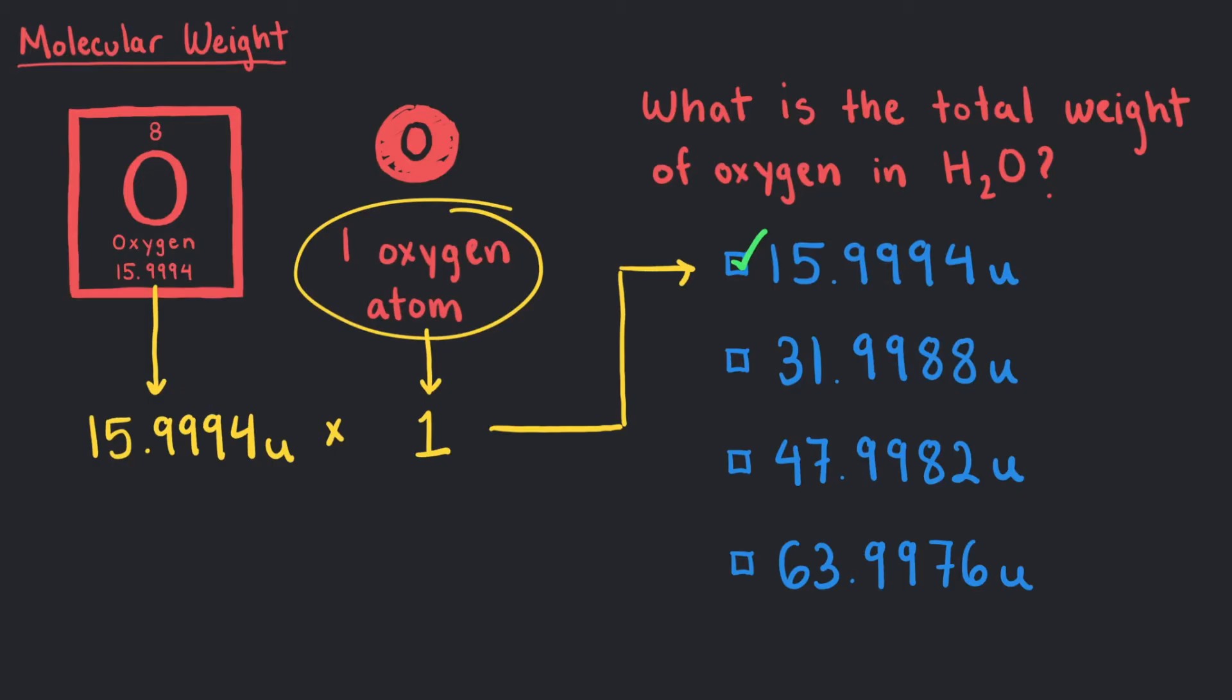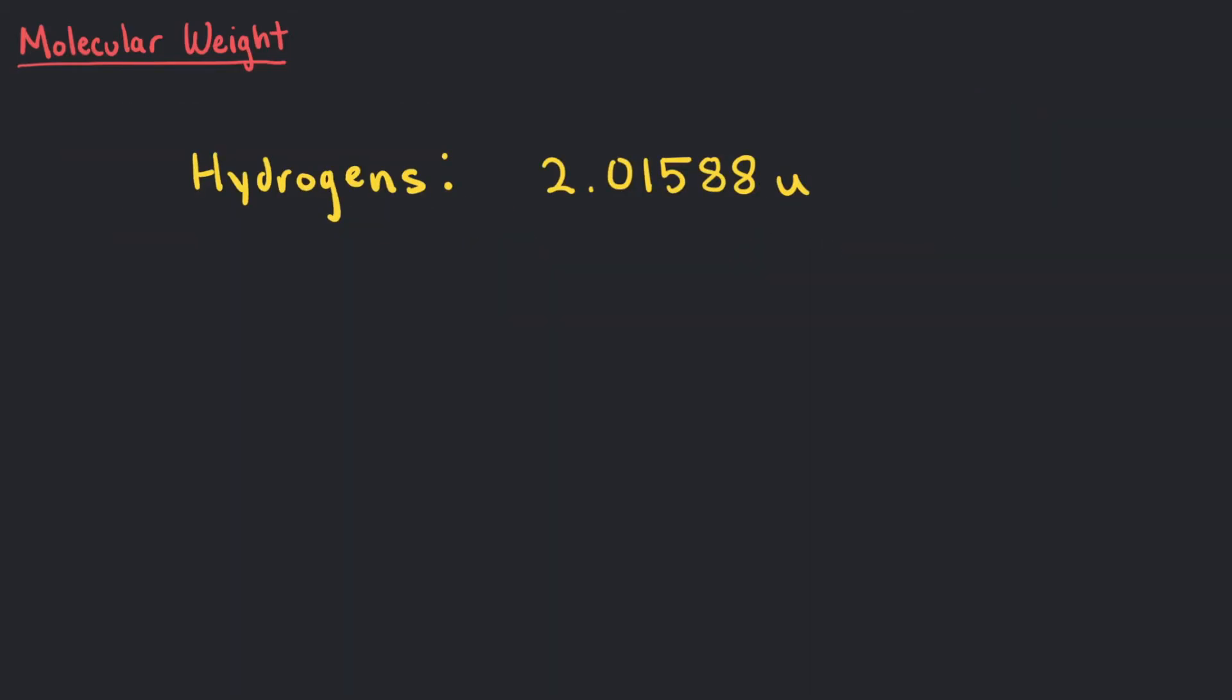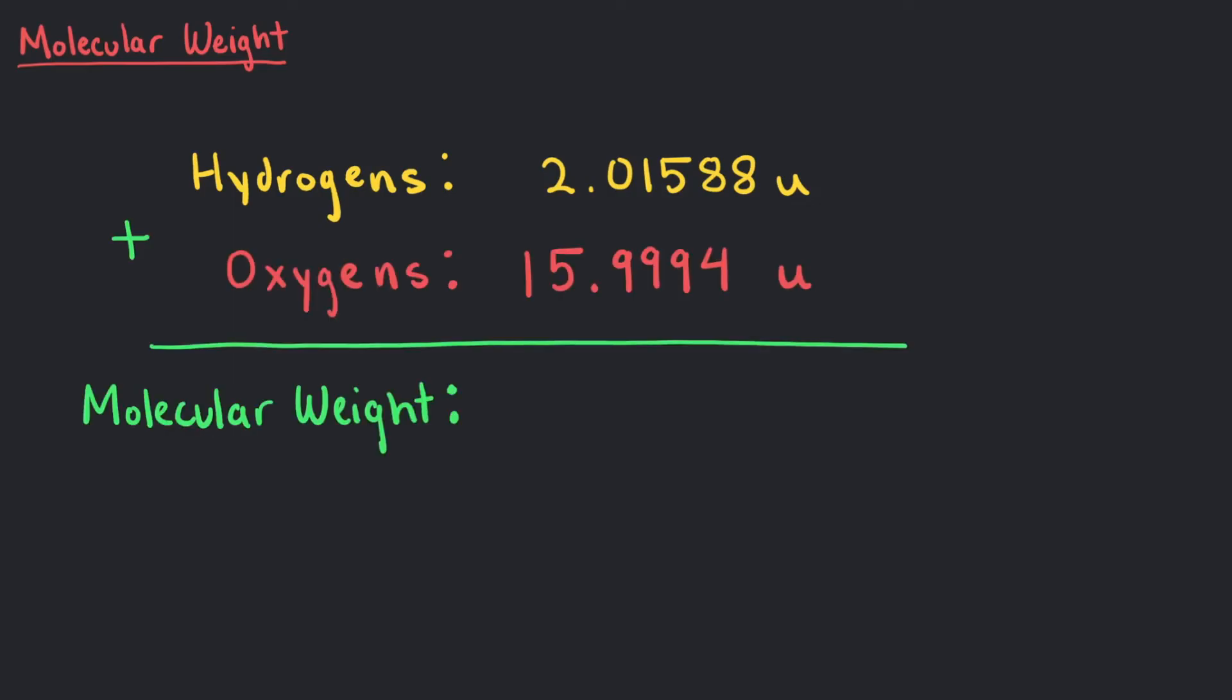Now, we can just add our total weight for the hydrogens plus the total weight of the oxygen to get a molecular weight of 18.0153U.